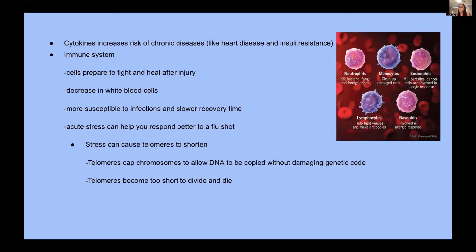Cytokines increase the risk of developing chronic diseases such as heart disease and insulin resistance. These stress hormones also affect our immune system — our body prepares to fight and heal after injury, but the number of white blood cells decreases, making us more susceptible to infections and causing slower recovery time. Although acute stress can help you respond better to a flu shot, chronic stress has been associated with shortening telomeres, which are the end caps of chromosomes that measure the age of a cell. Telomeres allow DNA to be copied every time a cell divides, but they become shorter each time, and when too short, the cell can no longer divide and it dies.